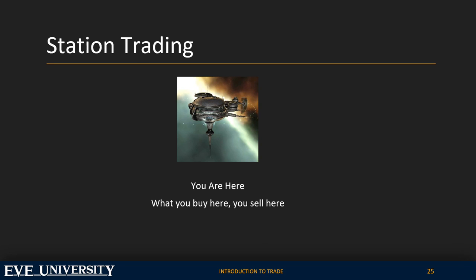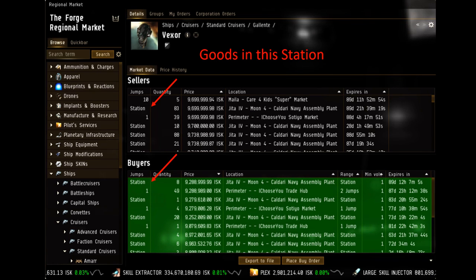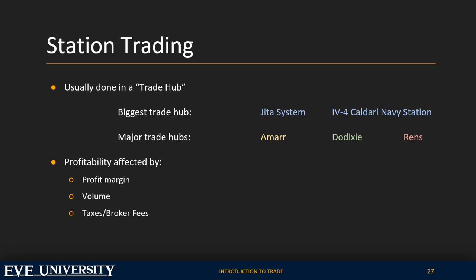Station trading means you buy what is available for sale in the station and resell it in the same station. The first column of market data shows what's available for sale in the station; you can also see items available in other stations and the number of jumps away. Station trading is usually done in a trade hub where you'll find the majority of products. Profit depends on factors like the price difference between sellers and buyers, volume of products sold per day, and a margin that covers taxes and broker fees.